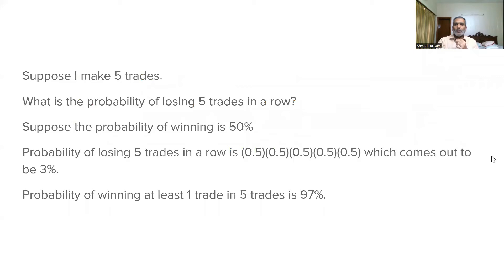In this video, we are going to talk about how to use probability theory and data. Suppose I make 5 trades — I want to know what is the probability of losing 5 trades in a row. Suppose the probability of winning a trade is 50%. You have a trading strategy that has a 50% chance of winning a trade, just like the flip of a coin.